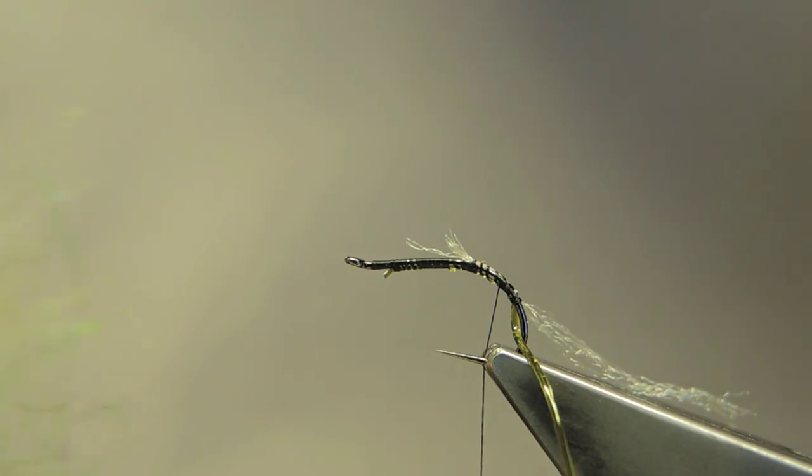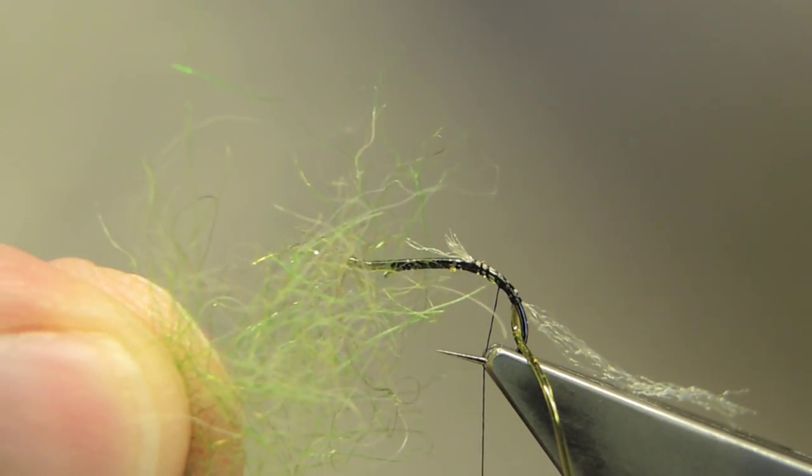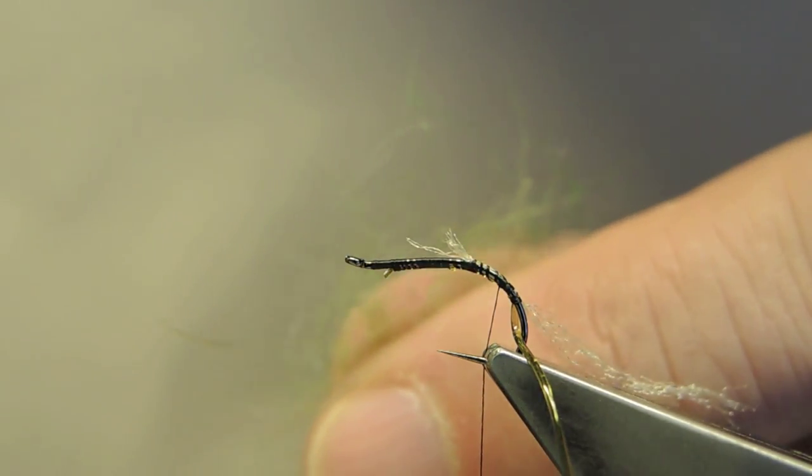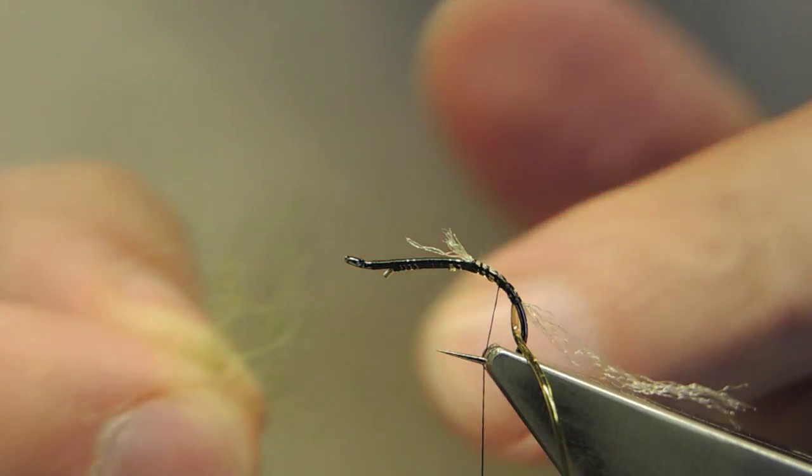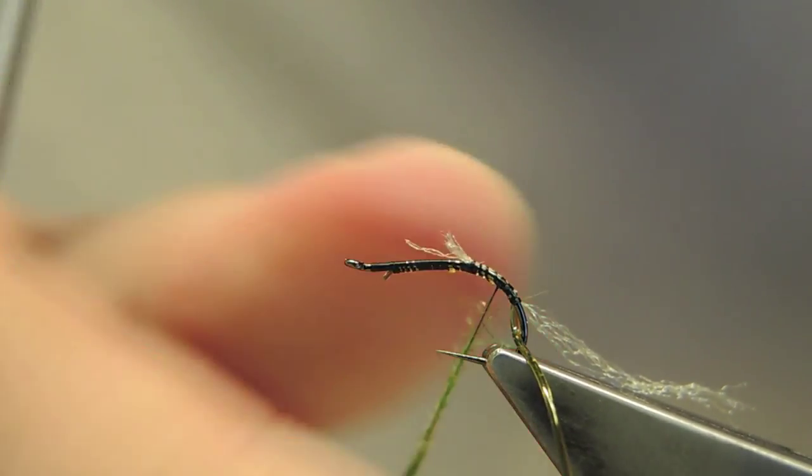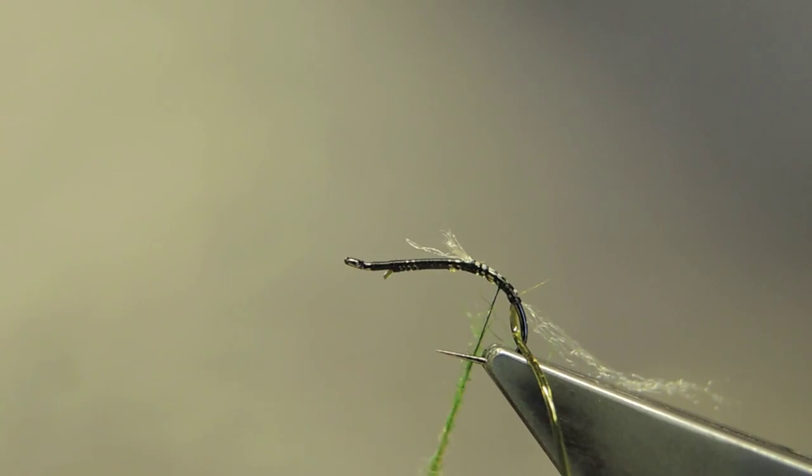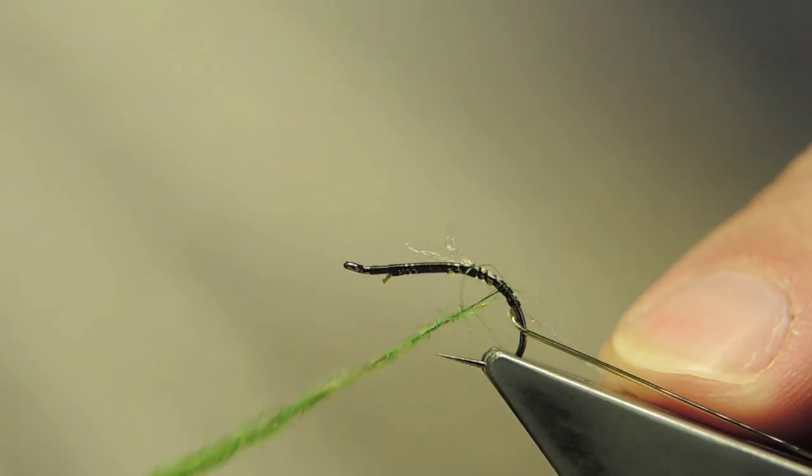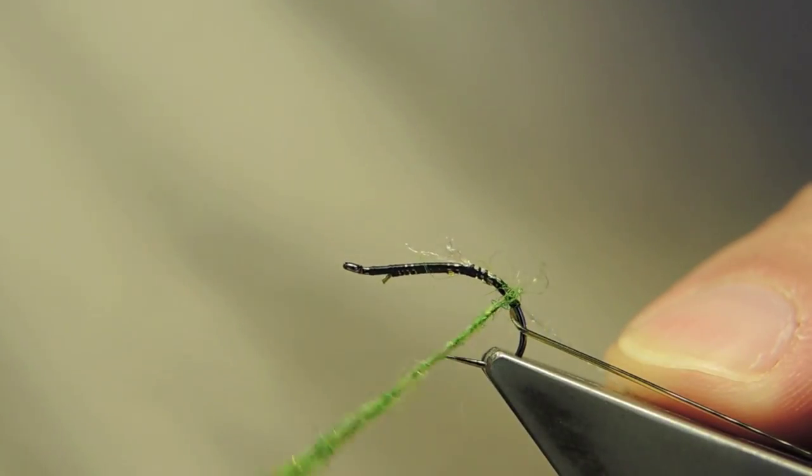For the body, it's a green and olive mix, some bright green and some medium olive. Simply twist it around the thread, then a body is formed.